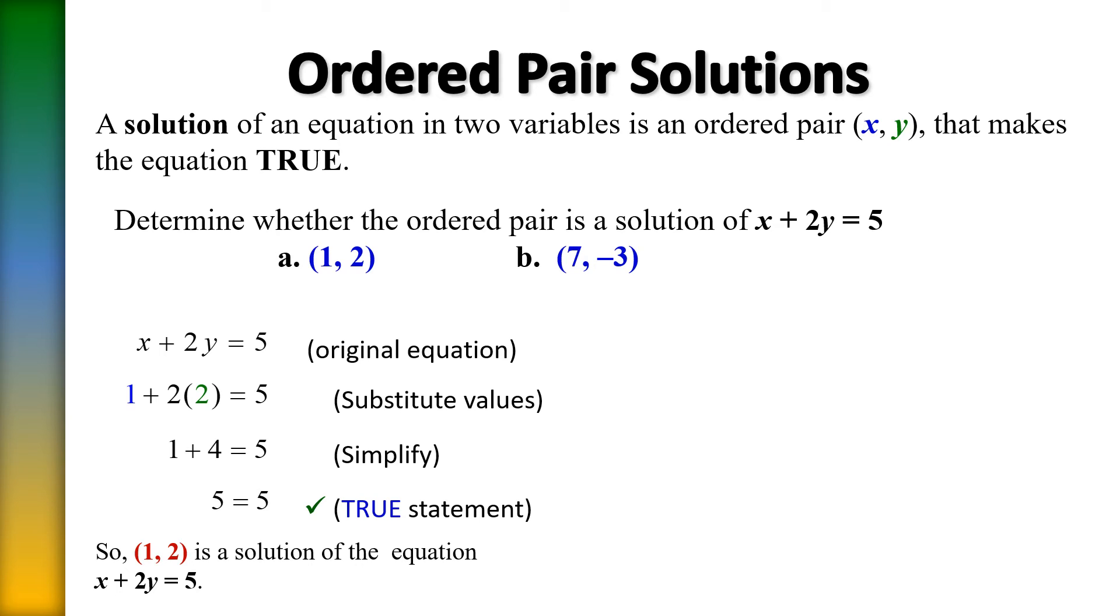Now we've got to do the original equation again. This time into the original equation, we're going to plug in the ordered pair of seven comma negative three. So we're going to remove x and replace with seven. We're going to remove y and replace with negative three. When we do that, it looks like this.